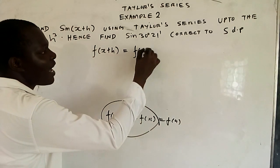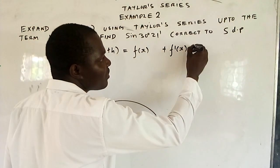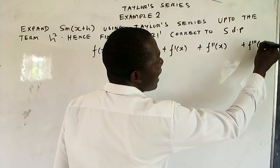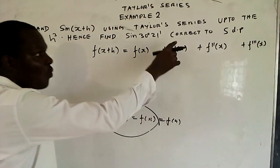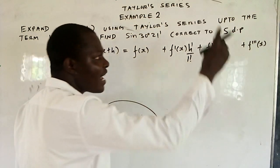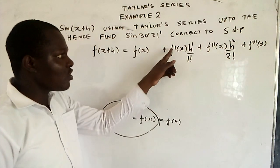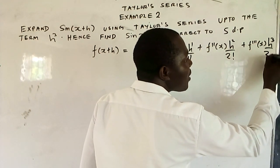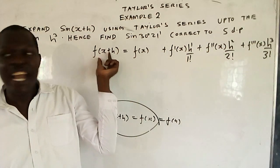We start from f of x, then plus — differentiate it for the first time — then plus, differentiate it for the second time, then plus, differentiate it for the third time. To get up to the term h cubed, you must have the third derivative. When f is differentiated once, you have h raised to power 1 over 1 factorial; second time, h squared over 2 factorial; third time, h cubed over 3 factorial. That is the Taylor series expansion.